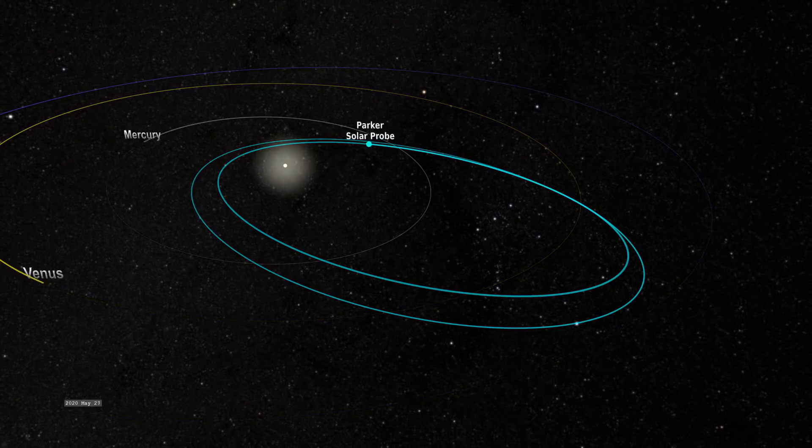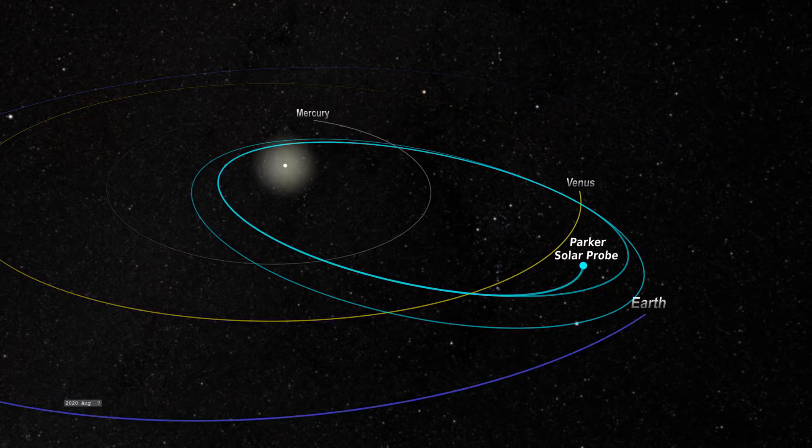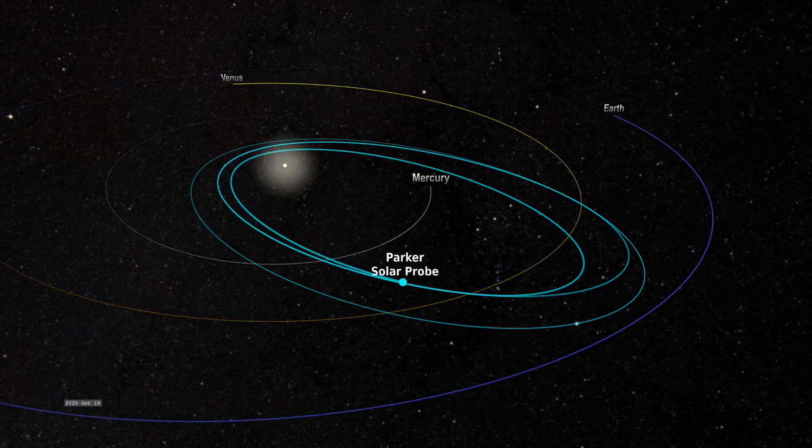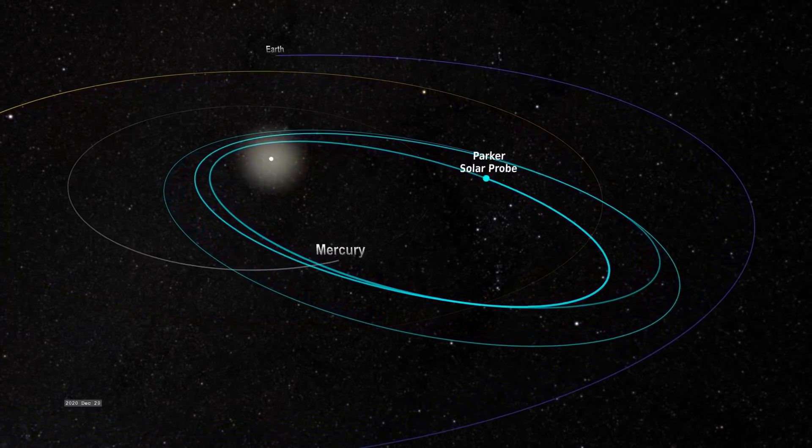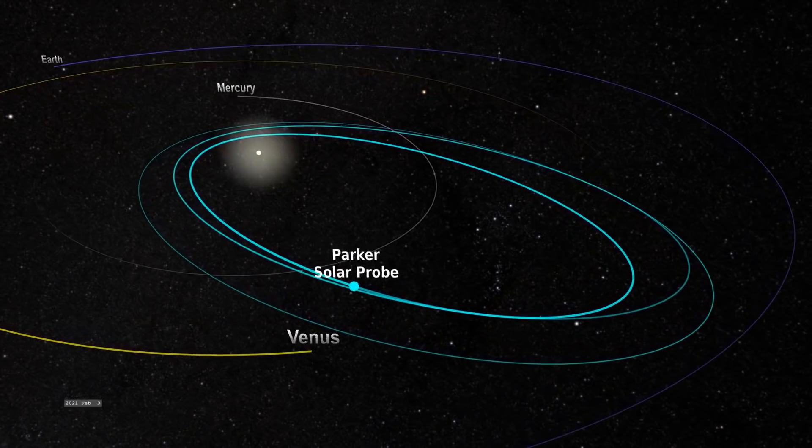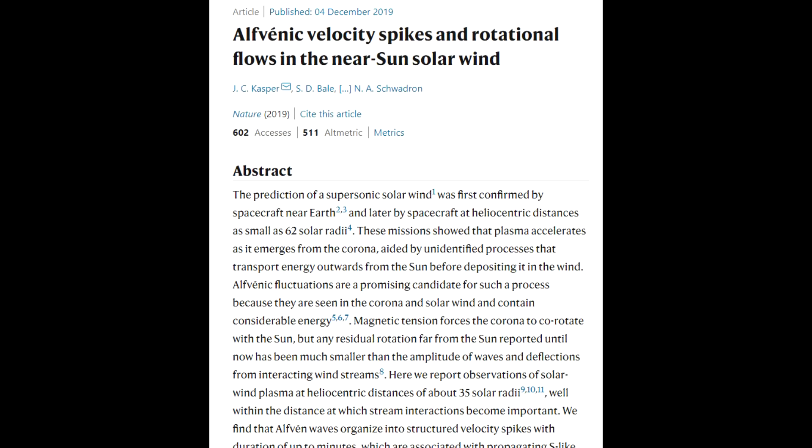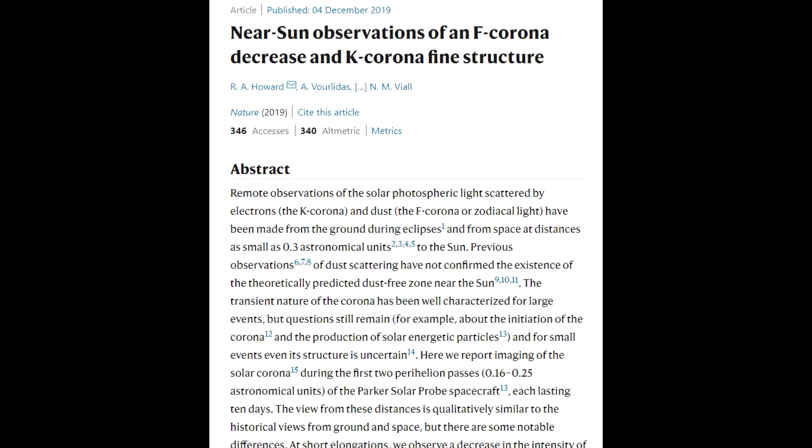The data has been coming in, and they're now actually sharing data from the first two perihelions with the general public. Of course, the science teams have been working on it as soon as it became available. And the first really interesting results have been published in this week's Nature. There are four featured papers based on new data from deeper inside the solar corona than we've ever been before.